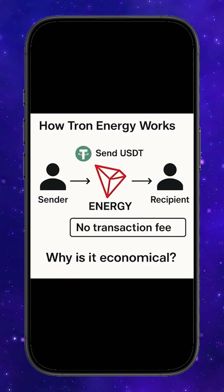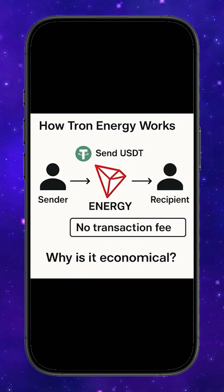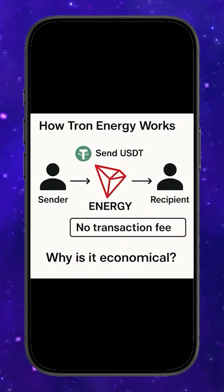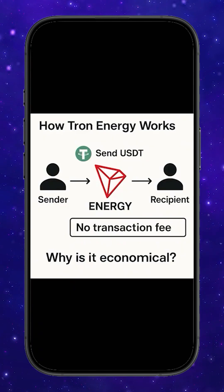You keep your TRX untouched — no freezing for three days, no locking your funds, no constant spending. You simply pay a small fixed amount, get enough energy for 2, 10, or even 40 transactions, and your transfers become almost free. For people who move USDT frequently — managing investor funds, arbitrage, paying partners or employees — this makes a huge difference. You save money, your TRX stays in your wallet, and every transaction becomes predictable in cost. That's why renting energy is not just convenient, it's financially smarter.